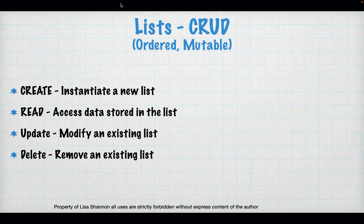We've talked about CRUD a little bit before — create, read, update, and delete. Create is when you're instantiating a new list or dictionary. Read is getting data out of that list. Update is modifying an existing list, and delete is completely removing the list.